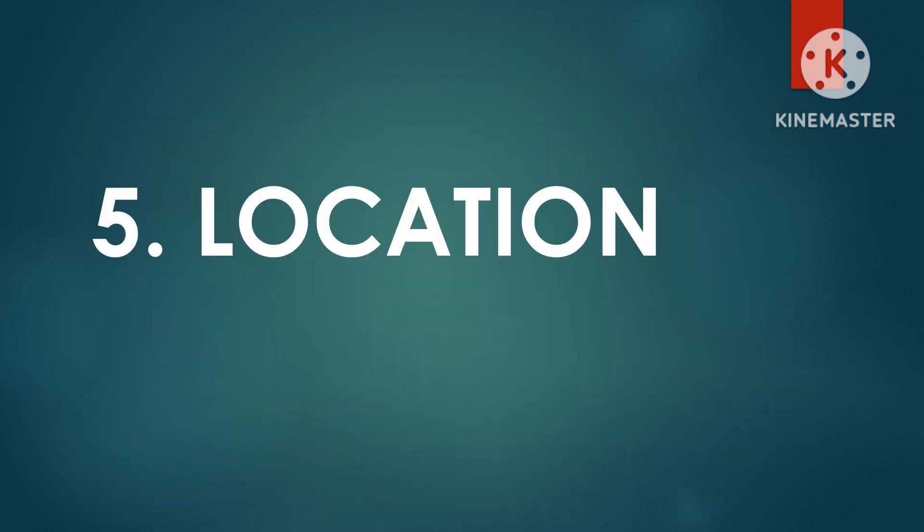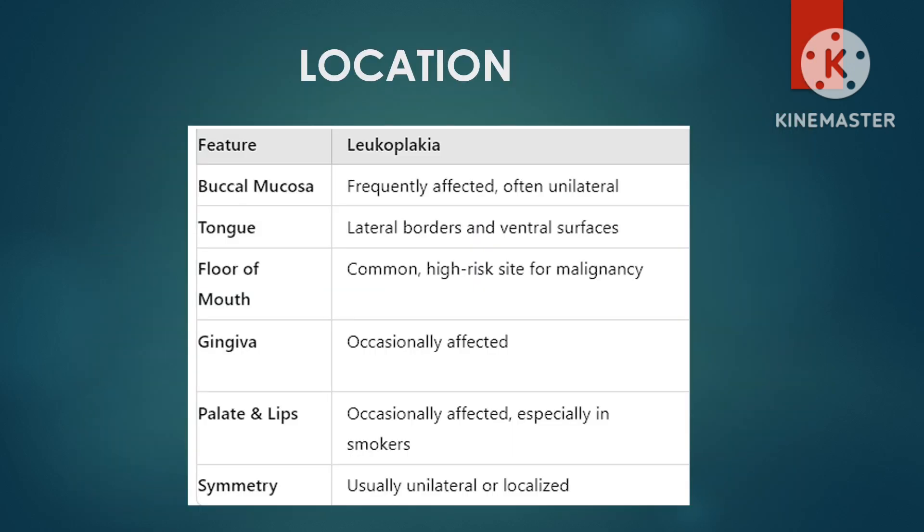Here is a comparison of common sites affected by leukoplakia and lichen planus. The most common sites affected by leukoplakia include the buccal mucosa — the inner cheeks — most frequently, especially in individuals with a history of tobacco use. The lateral borders and ventral surface of the tongue are also affected. Leukoplakia can appear under the tongue in areas of chronic irritation, and it can also occur on the palate — both hard and soft — particularly in smokers.